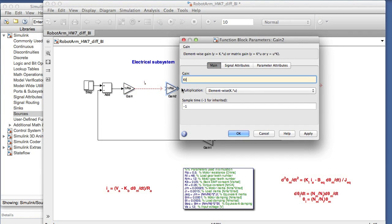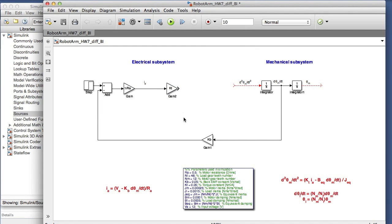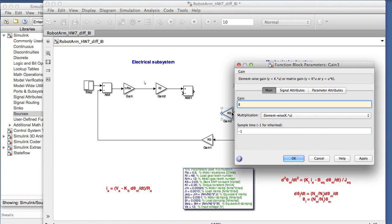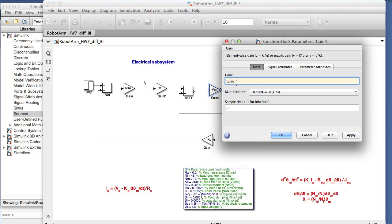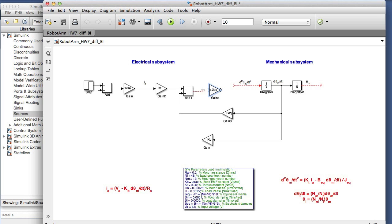Next, we construct the mechanical system right-hand side of the equation. The gain block kt times armature current. We get the motor torque minus rotational damping times angular velocity, the damping torque. And then, this is divided by Jeq. We obtain the left side of the equation, which is d theta M dt squared.